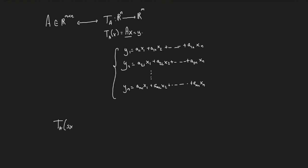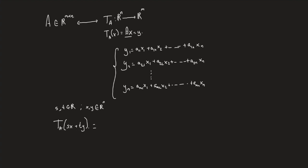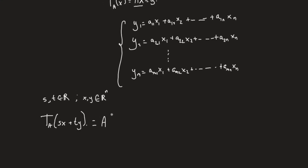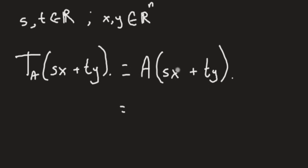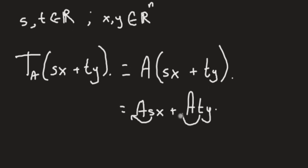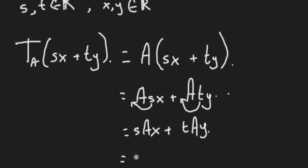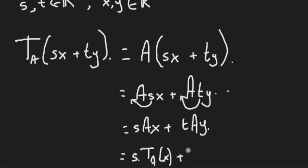Say I input S·x plus T·y, where s and t are scalars and x and y are n-dimensional vectors. The output is simply s·T_A(x) plus t·T_A(y). You can easily prove that by rewriting this as A(s·x + t·y), then distributing A using the addition property to get A·s·x plus A·t·y. Since s is a scalar you can pull it outside, same for t, giving s·A·x plus t·A·y — and since A·x is T_A(x) and A·y is T_A(y), there you go.